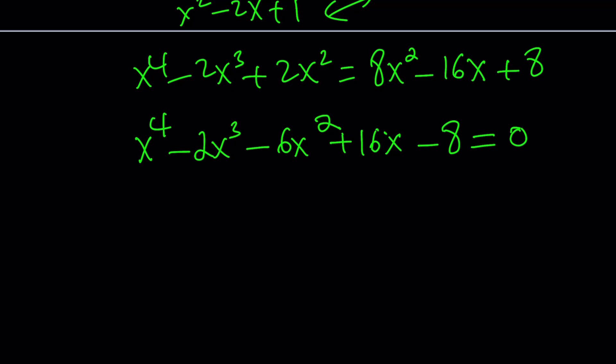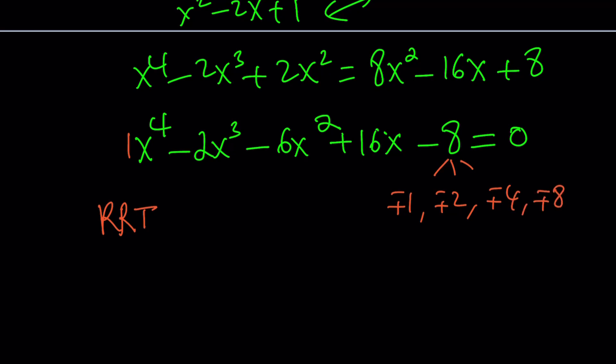This is a quartic equation. There's a quartic formula, but it's quite complicated, so there's another method. If there are any rational roots, we can use what's called the Rational Root Theorem, abbreviated as RRT. RRT depends on the factors of the constant divided by the factors of the leading coefficient. In this case the leading coefficient is 1, so we only look at factors of 8: plus or minus 1, plus or minus 2, plus or minus 4, and plus or minus 8 as candidates. We have to plug them in and test.